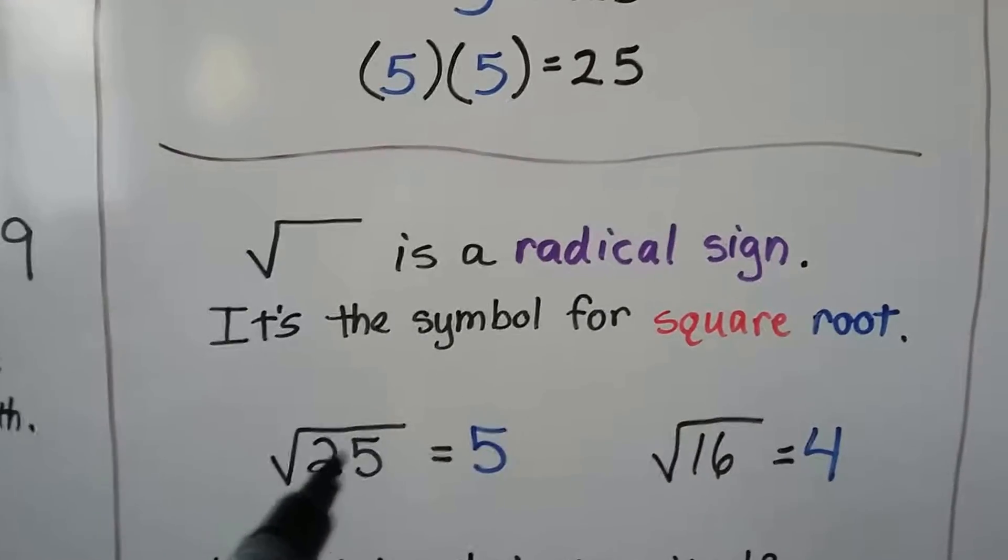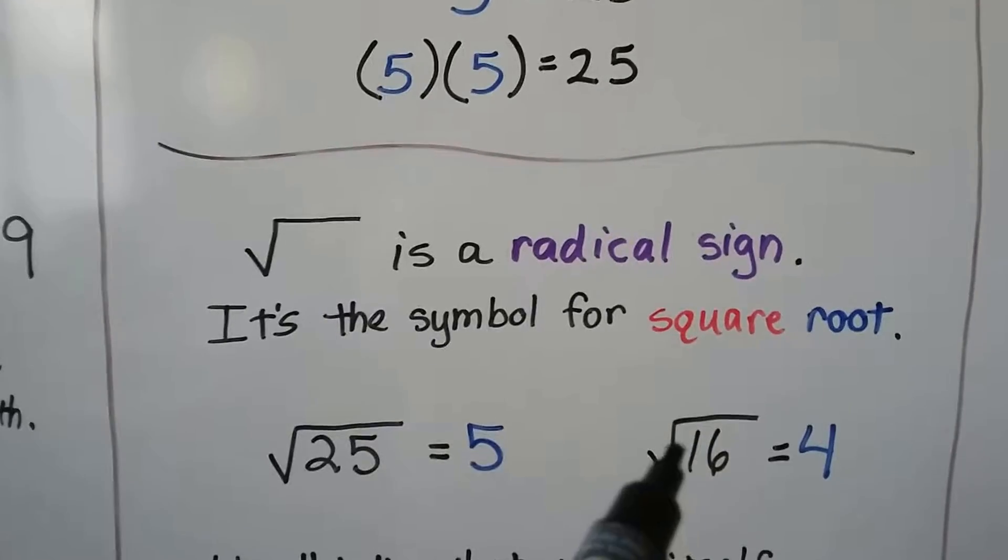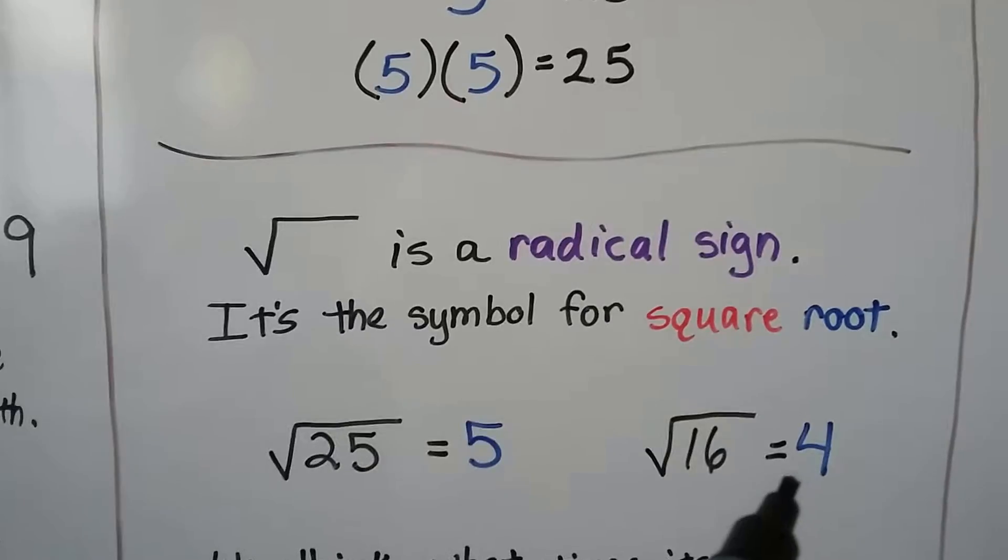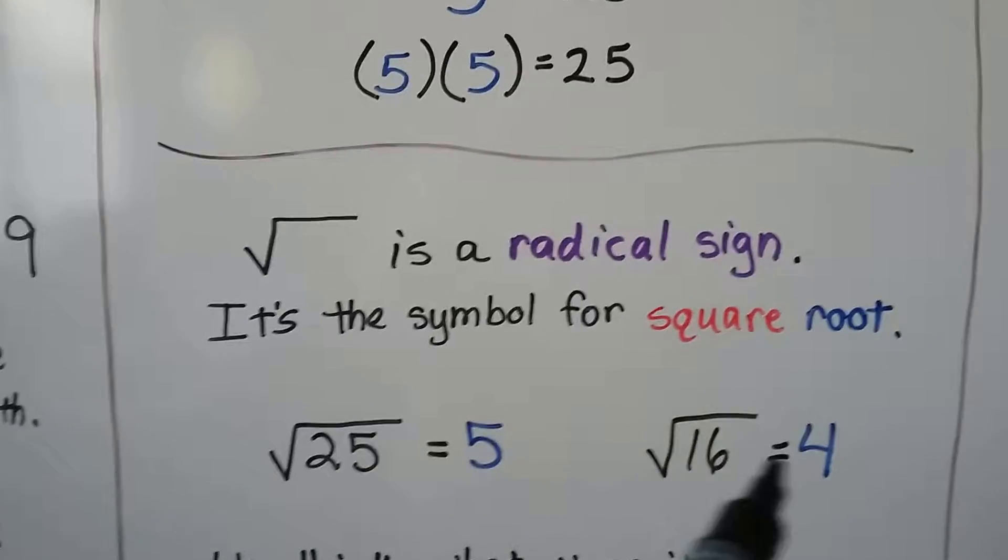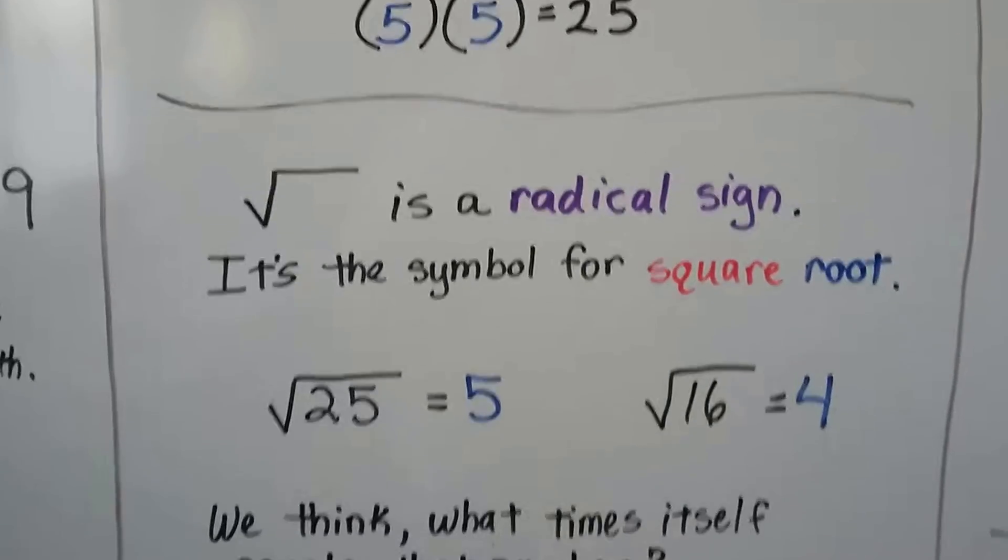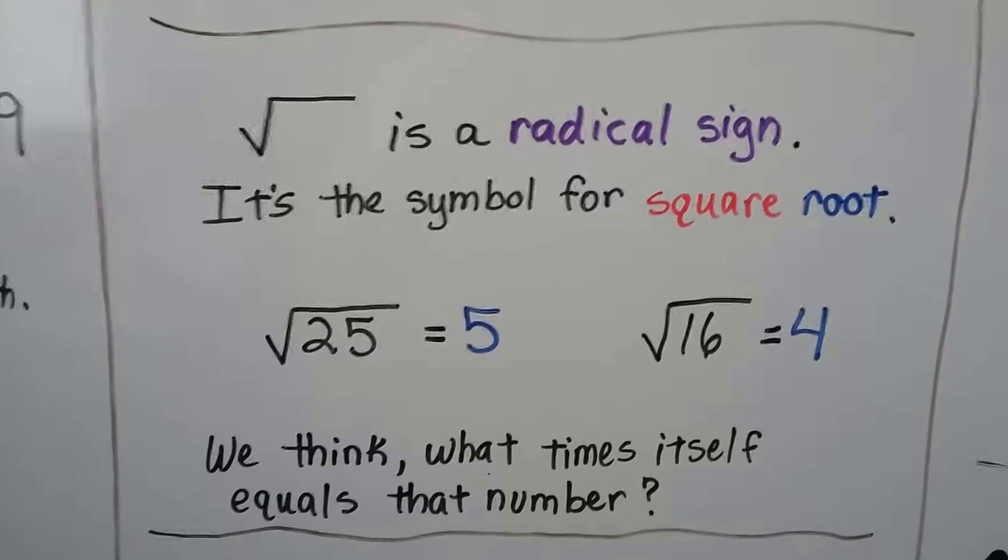This is the square root of 25, and it equals 5. The square root of 16 equals 4. 4 times 4 is 16, so the square root is 4. We think, what times itself equals that number?